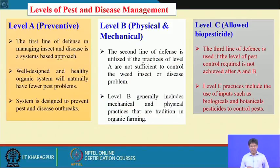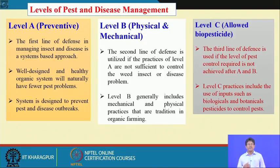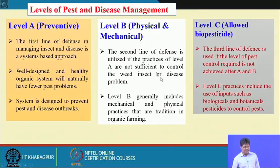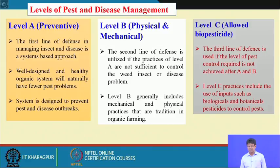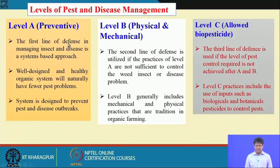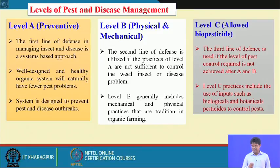In organic farming, if you want to brand a product as organic food, there should be no use of any synthetic pesticides or synthetic chemicals. There are three levels of management in organic farming: Level A is a preventive method, Level B is physical and mechanical method, and Level C is where only biopesticides are allowed. We usually go for Level A first, then Level B, and if both fail, then Level C.